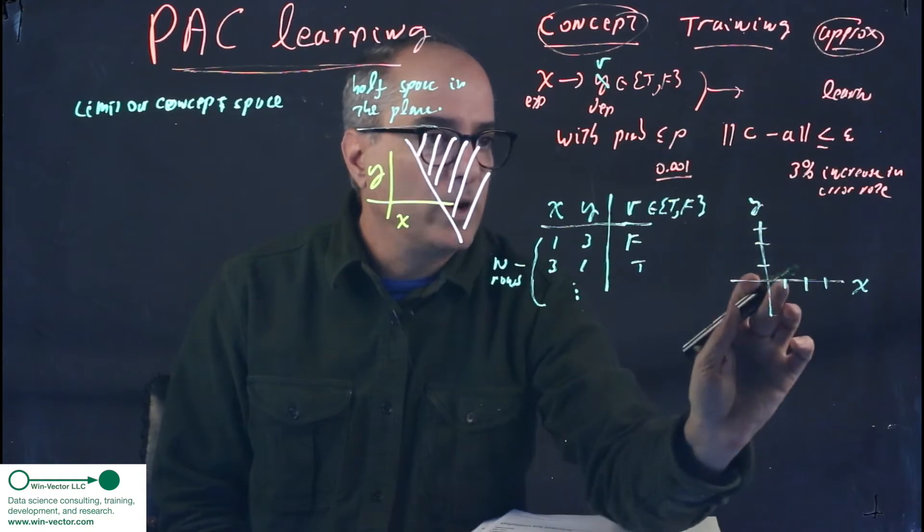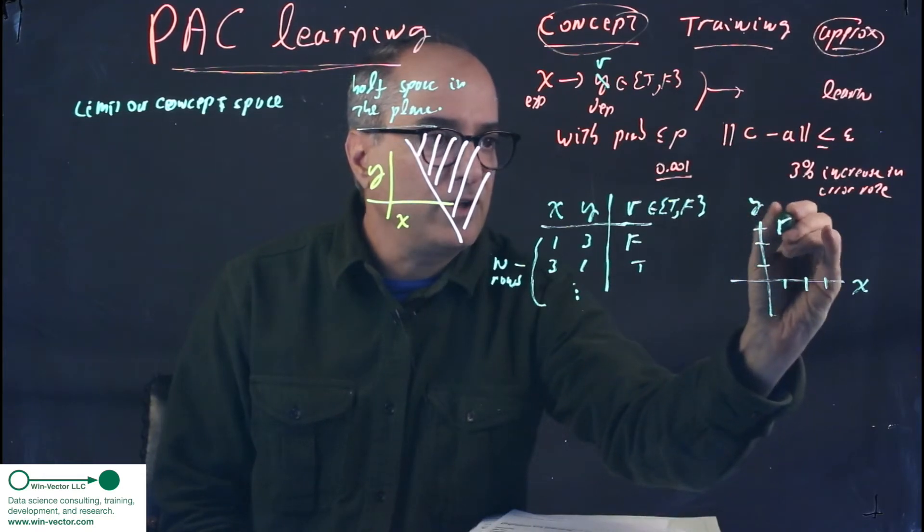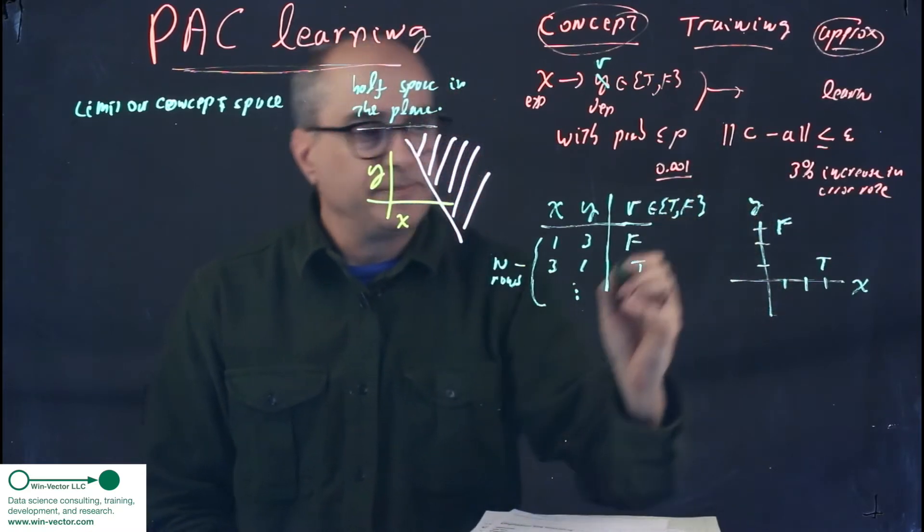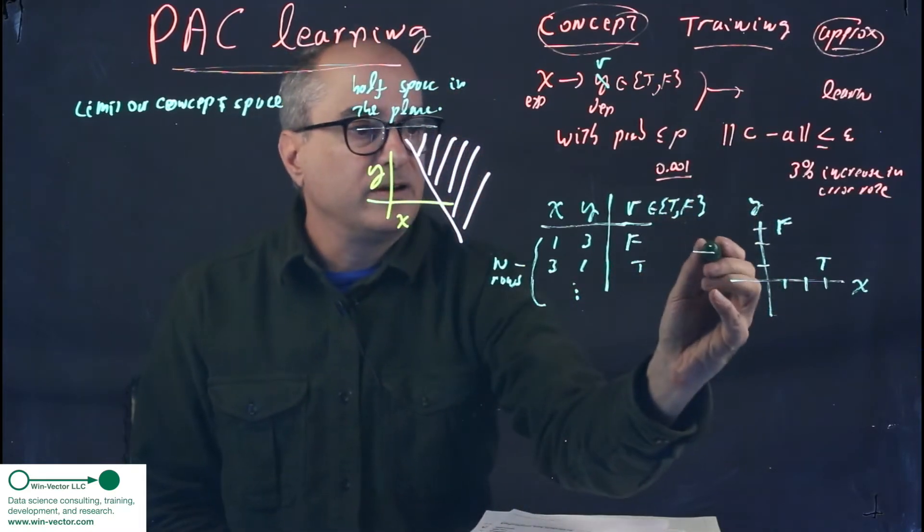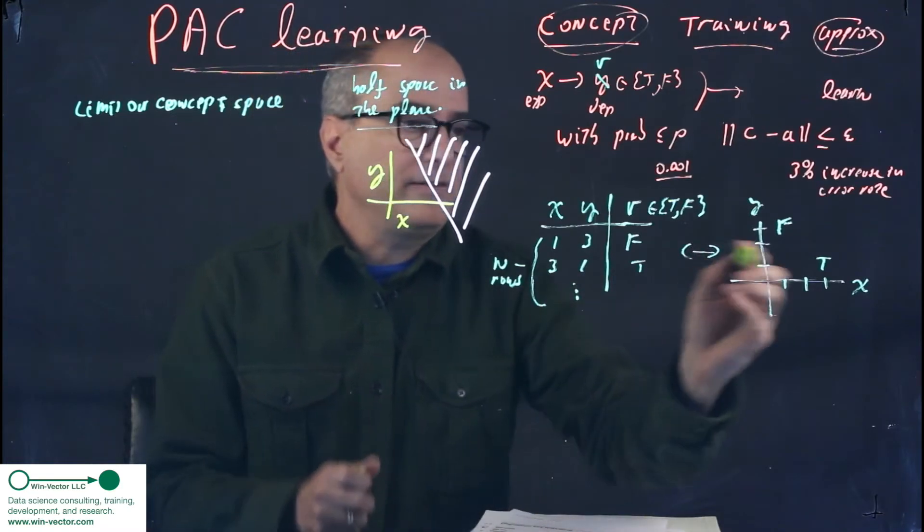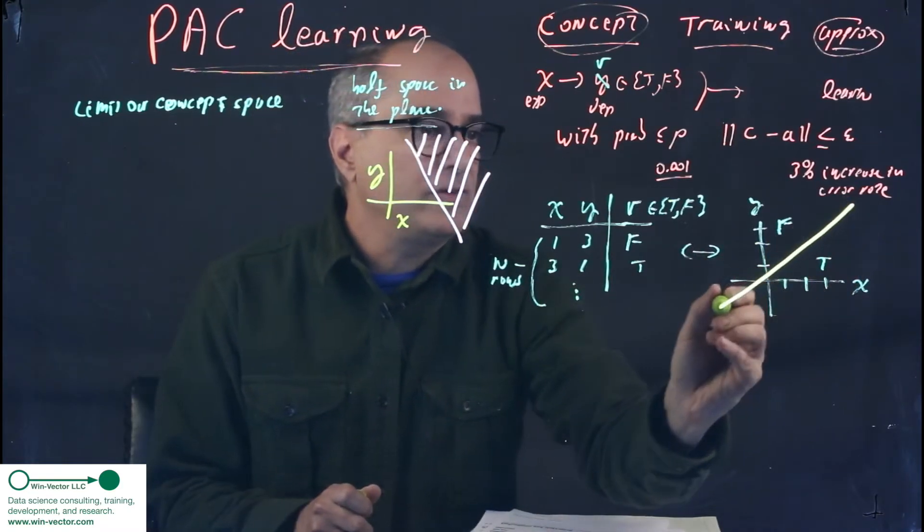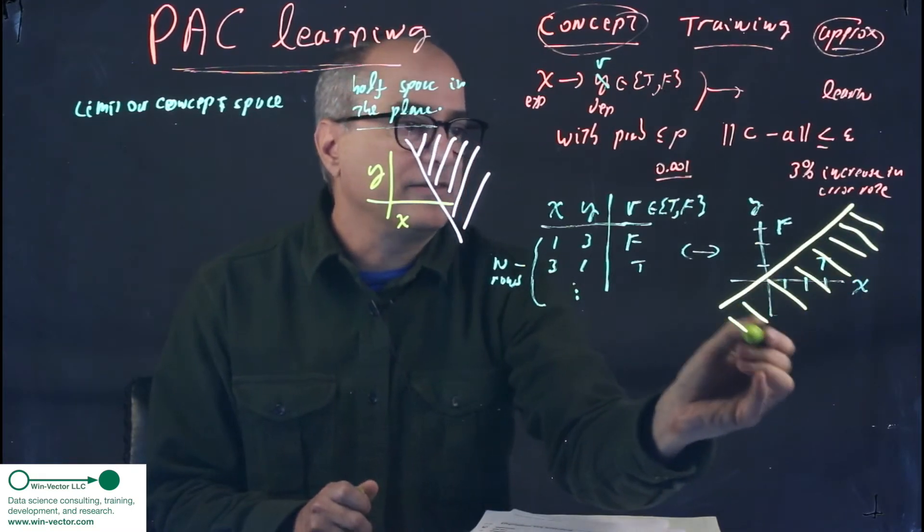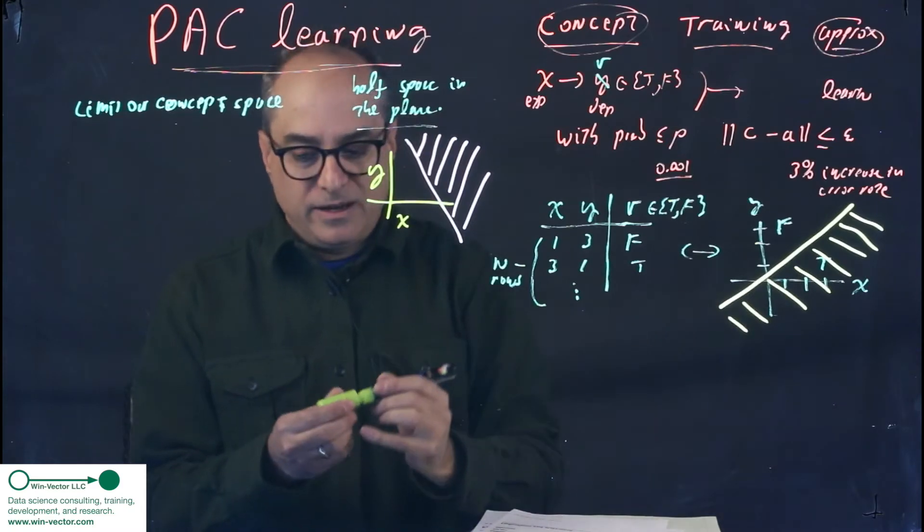And again we can present the same data graphically. So 1, 3, false, 3, 1, true. These are similar presentations and as we've claimed there's a concept that reproduces the effect on training. It says the trues are all on this side of this half space.